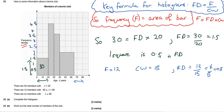Now all we have to do is draw a bar that goes up to 0.8. If 1 square is 0.5, then we just need 3 little squares. So it should look something like that. And there are no members with A bigger than 80, so that's fine. Our histogram is completed, and we know the frequency there is 12.